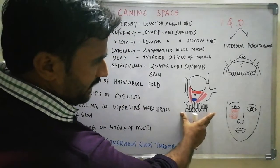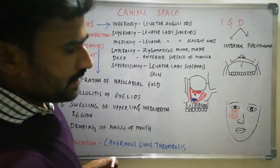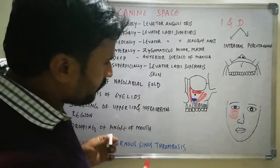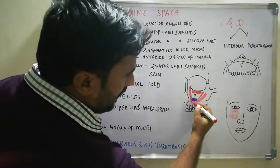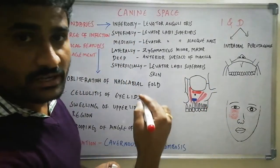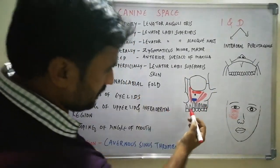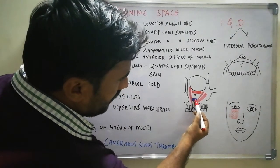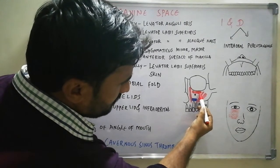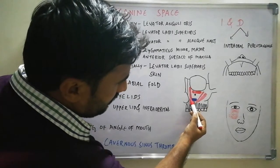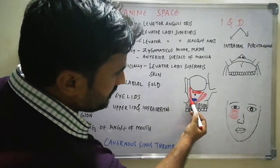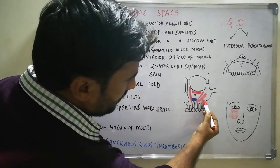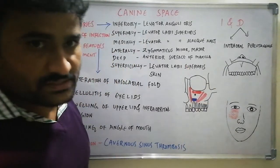In this diagram you can see the boundaries. When infection from the canine perforates the labial cortex of the maxilla above the levator anguli oris muscle. This blue colored one is the levator anguli oris, this is the levator labii superioris, this is levator labii superioris alaeque nasi, this is zygomaticus minor, and this is zygomaticus major muscle.